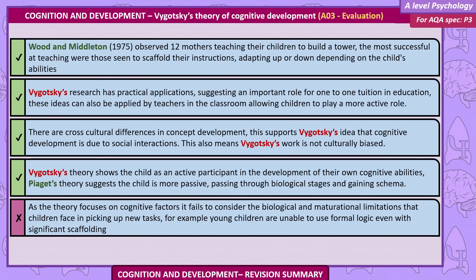Vygotsky's research has practical applications, suggesting an important role for one-to-one tuition in education. These ideas can also be applied by teachers in the classroom, allowing children to play a more active role. There are cross-cultural differences in concept development, which supports Vygotsky's idea that cognitive development is due to social interactions, meaning Vygotsky's work is not culturally biased. In contrast, Piaget's theory suggests the child is more passive, passing through biological stages and gaining schemas along the way. However, the theory fails to consider the biological and maturational limitations that children face — for example, young children are unable to use formal logic even with significant scaffolding.